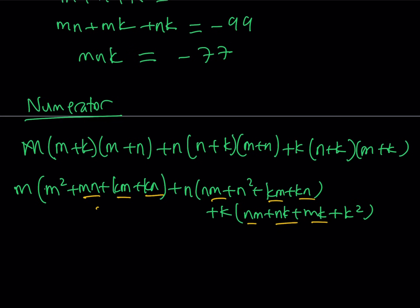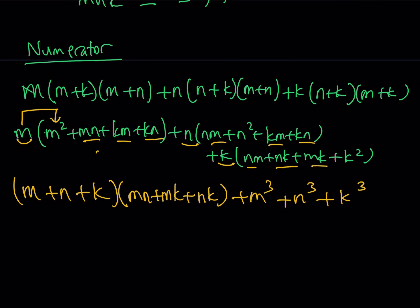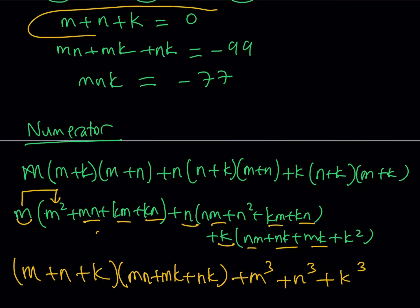They're just going to repeat. So we can basically take out that as a common factor and multiply. Since they're being multiplied by M, N, K, so we have the following: M plus N plus K is being multiplied by MN plus MK plus NK. So that's the first part. And then what is left, we multiply M times M squared, which is M cubed, and then we have N cubed and then K cubed. Now this is the numerator. We haven't done the denominator yet. But notice that this relationship gives us that M plus N plus K is equal to 0.